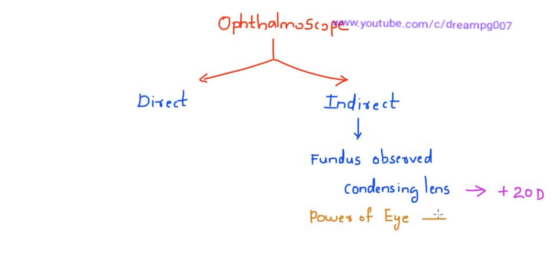Power of the normal human eye is plus 60 diopter. So the magnification provided by indirect ophthalmoscopy equals power of eye divided by power of the lens, which is 60 divided by 20, that is 3 times. So indirect ophthalmoscopy provides a magnification of 3 times.